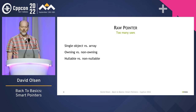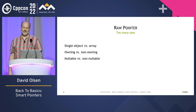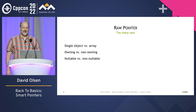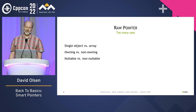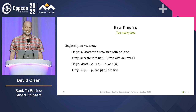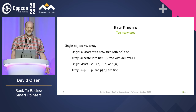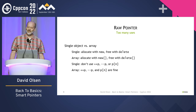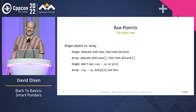One of the problems with raw pointers, which these small examples alluded to, is that pointers can represent many things — pointers are too powerful for their own good. There are many different independent characteristics that the use of a pointer can have. The first characteristic of interest is whether the pointer points to a single object or to an array of objects. This affects what you can do with the pointer — operators new and delete have different forms for single objects and arrays.